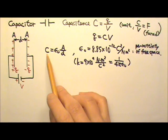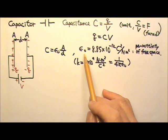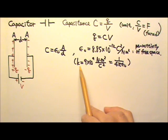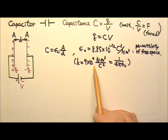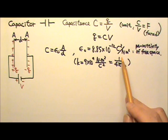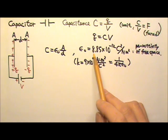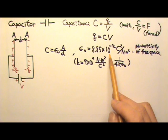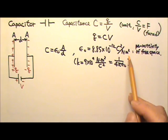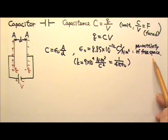I am not going to derive this equation here. The epsilon naught here is a constant that is related to the K 9 times 10 to the 9th Newton meter squared per Coulomb squared, which is 1 over 4 pi epsilon naught. So this epsilon naught is 8.85 times 10 to the negative 12 Coulomb squared per Newton meter squared. And this is called the permittivity of free space.